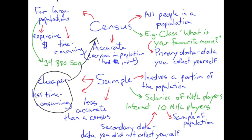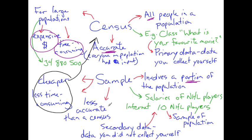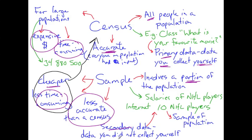To review some key points: a census involves all people in a population and is very accurate because everyone in the population has input into the question. However, for large populations, a census survey is very expensive and time consuming. A sample survey involves a portion of the population — it is less accurate than a census, but cheaper and less time consuming. Primary data is data you collect yourself, while secondary data is data someone else collected that you then use.